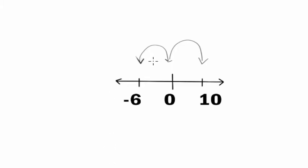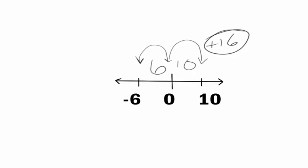Counting these spots, we know that there are 6 places between negative 6 and 0, and 10 places between 0 and 10. We're a grand total of 16 spaces, and since we're moving to the right, it's a positive 16.